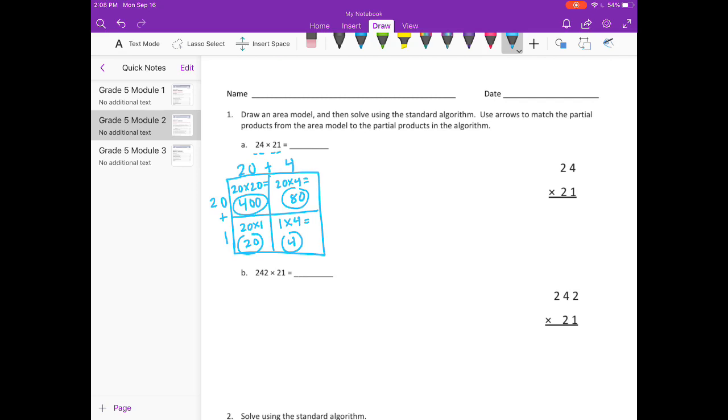And if we add all those together, I'm going to add 80 and 20 and get 100. So then we have 400 plus 100 plus 4 would be 504. So let's see if that's what we get with our standard algorithm.